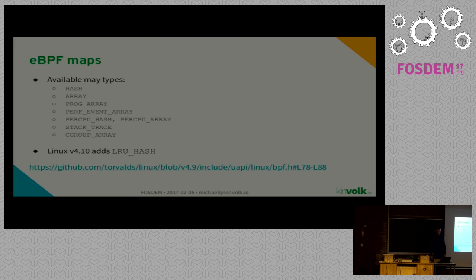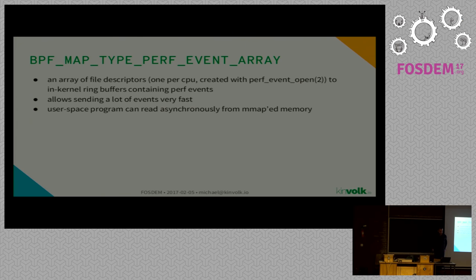That's the list of existing maps. We have a hash, which works like you'd expect — key-value. We have an array, and then different types for special use cases. One in detail is the perf event array: an array of file descriptors with perf event data. The kernel can write into a ring buffer without waiting for user space, and the user-space program can map the ring buffer memory and read from it asynchronously. That's a map type you often use with kprobes for tracing, and we'll see that in an example later.